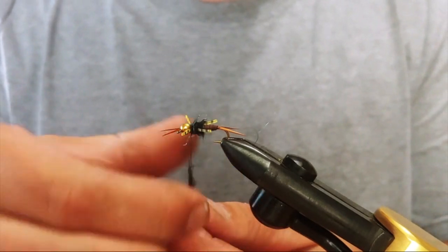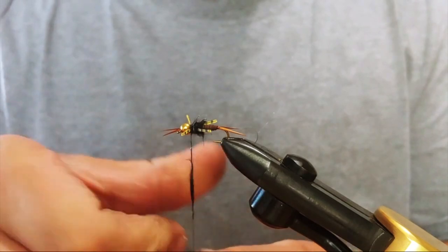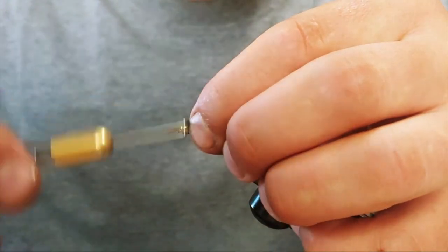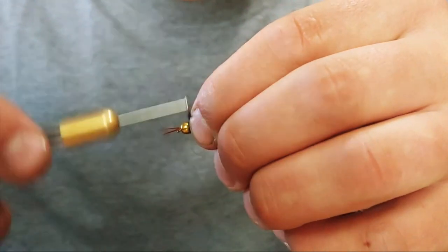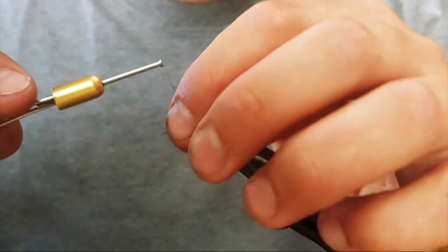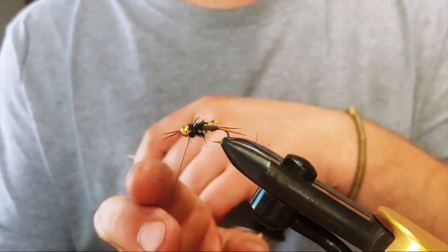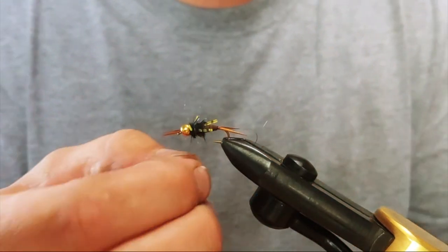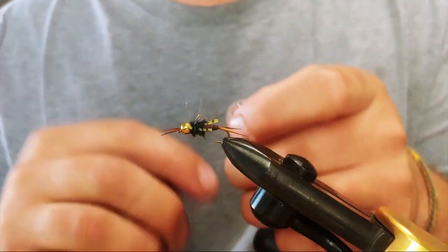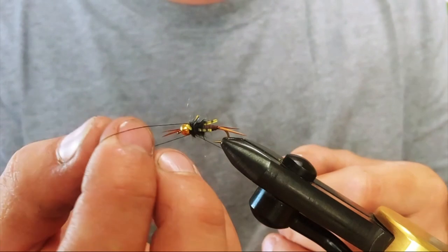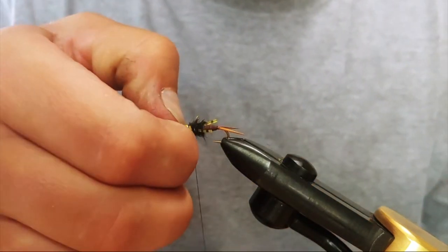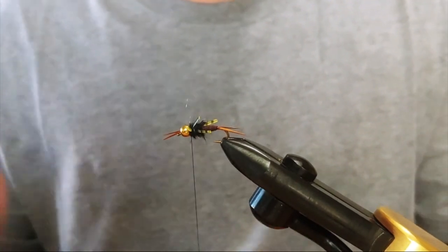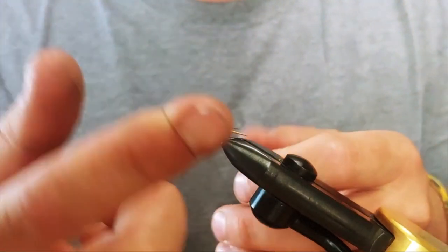And go ahead and finish off in front of the legs. And a couple whip finish. Again I just always like to do it the old school way. I saw this way back a long time ago from this old guy, can't even remember what his name was, but I saw him doing that and I was like, well, why buy a whip finisher if I can just do it by hand?